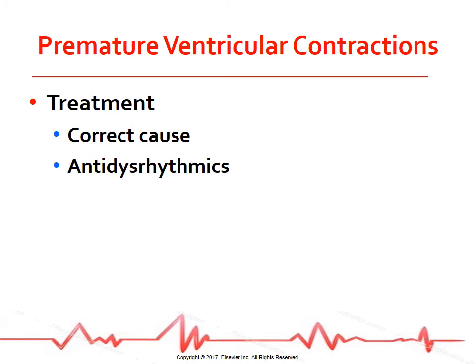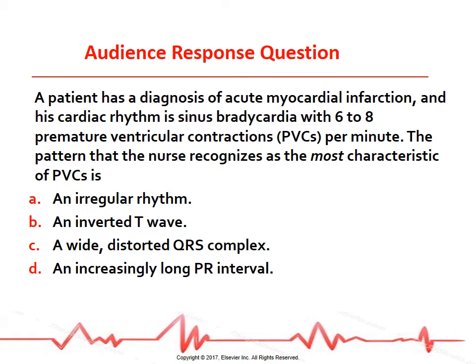Treatment for PVCs relates to the cause. Oxygen therapy for hypoxia, electrolyte replacement, and assessment of the patient's hemodynamic status are important to determine whether drug therapy is needed. Drug therapy includes beta blockers or amiodarone. Practice question: A patient with a diagnosis of acute myocardial infarction has a cardiac rhythm of sinus bradycardia with six to eight premature ventricular contractions per minute. The pattern the nurse recognizes as most characteristic of PVCs is A) an irregular rhythm, B) an inverted T wave, C) a wide, distorted QRS complex, or D) an increasingly long PR interval. The answer is C — premature ventricular contractions have wide and distorted QRS complexes.